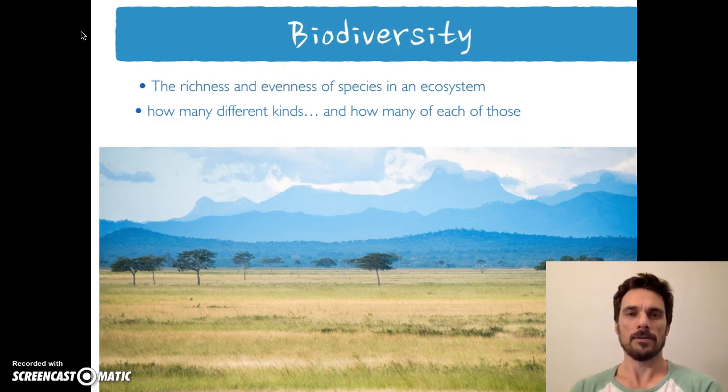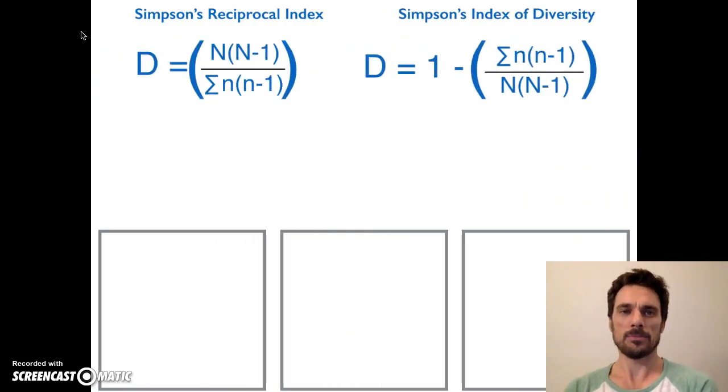So let's go through and do a couple examples. Before I go any further, let's just quickly point out that there are several different ways to calculate Simpson's index. The IB in their syllabus for biology will put this equation here on the upper left, and this shows Simpson's reciprocal index.